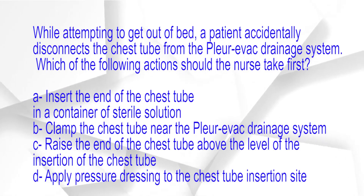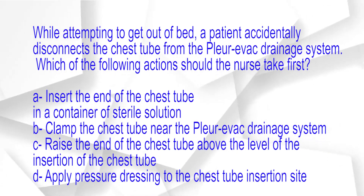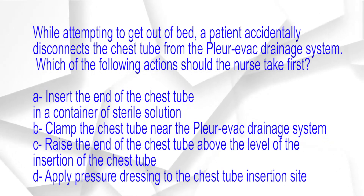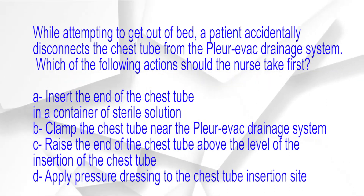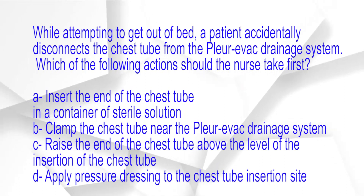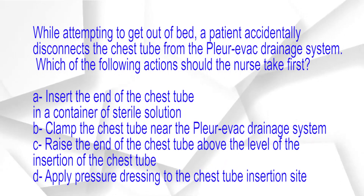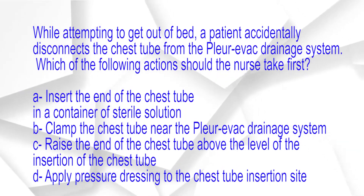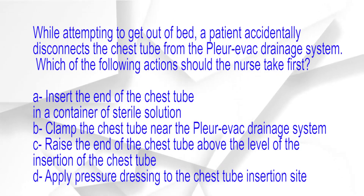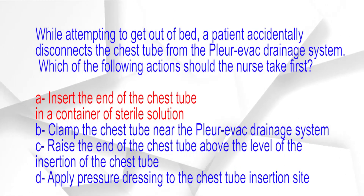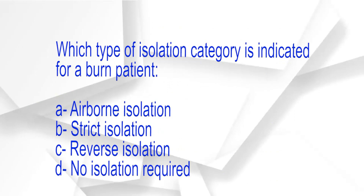While attempting to get out of bed, a patient accidentally disconnects the chest tube from the pleur-evac drainage system. Which of the following actions should the nurse take first? A. Insert the end of the chest tube in a container of sterile solution. B. Clamp the chest tube near the pleur-evac drainage system. C. Raise the end of the chest tube above the level of insertion. D. Apply a pressure dressing to the insertion site. The correct answer is option A: Insert the end of the chest tube in a container of sterile solution.